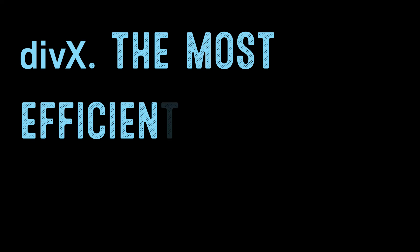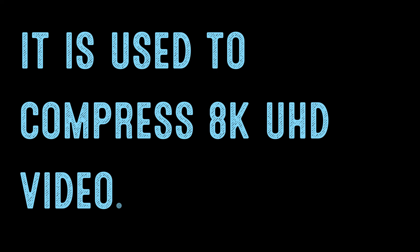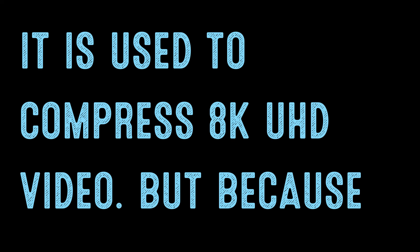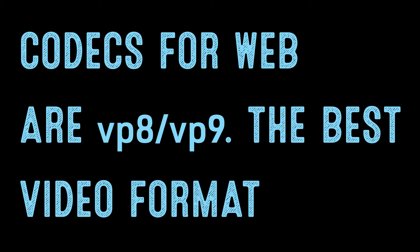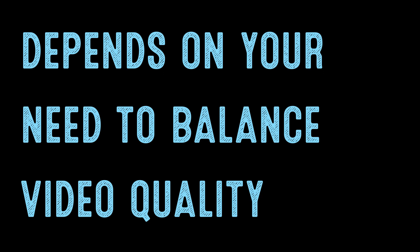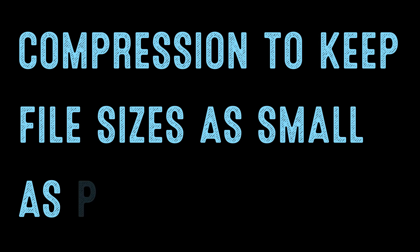The most efficient codec is HEVC or H.265. It is used to compress 8K UHD video, but because it requires a licensing fee, it is not compatible or supported by most devices or browsers. So the more common codecs for the web are VP8 or VP9. The best video format depends on your need to balance video quality against the size of the video. Video is typically stored using lossy compression to keep file sizes as small as possible.